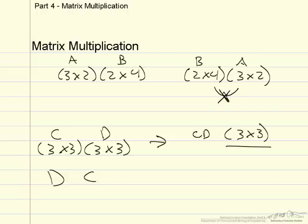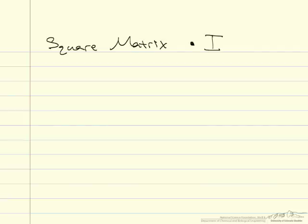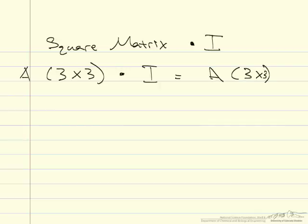There are two special types of multiplication. The first is when you multiply a square matrix by its identity. If you have a 3 by 3 matrix and multiply it by the identity, you get back the same 3 by 3 matrix. The second is when you multiply square matrix A by its own inverse — what you get back instead is the identity matrix.